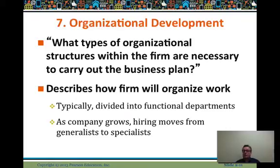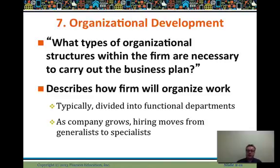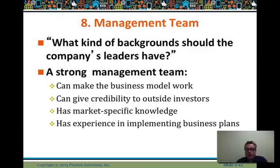What type of organizational structure is necessary to carry out this plan? What functional and strategic areas, what vertical lines of functions do you need to support? Horizontal support structures might include finance, legal, and information technology, while vertical areas include marketing, sales, production, and distribution. As your company grows, you tend to move from hiring generalists to specialists. And your management team — what backgrounds do you need for leaders to make the business model work?